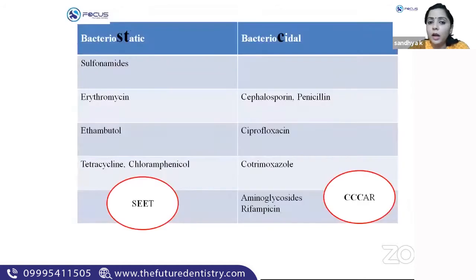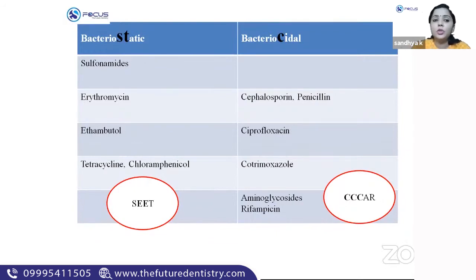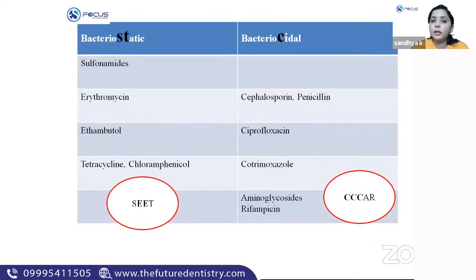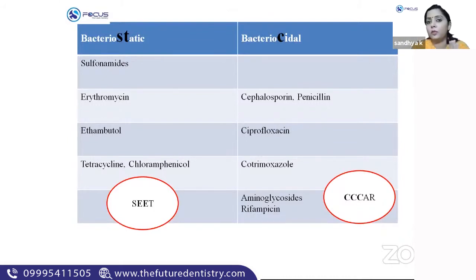Another important grouping: bacteriostatic agents versus bactericidal agents. Bacteriostatic only inhibits multiplication of bacteria, whereas bactericidal completely destroys bacteria. For bacteriostatic agents, use the mnemonic SEET: sulfonamides, erythromycin, ethambutol, tetracycline. And since tetracycline is there, chloramphenicol is also bacteriostatic.